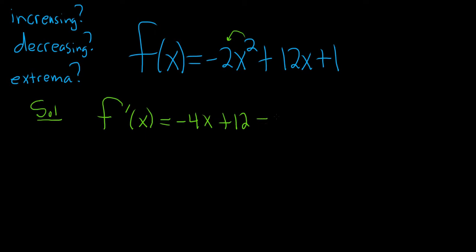So now we just have to set it equal to 0. So subtracting 12 from both sides will give us negative 4x equals negative 12. Just subtracting 12. And these cancel. And then dividing by negative 4 will give us x equals 3.